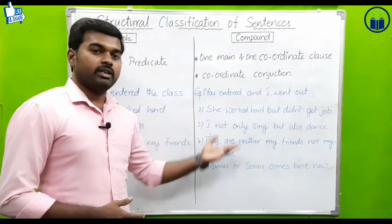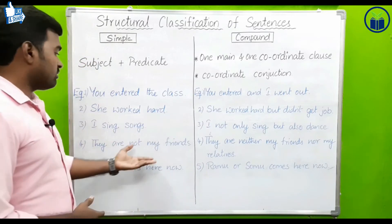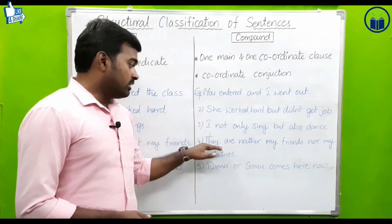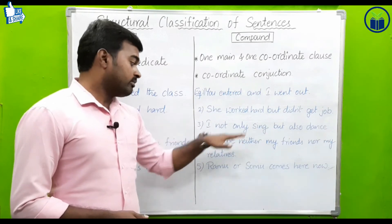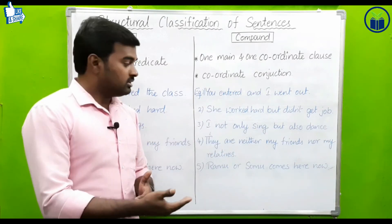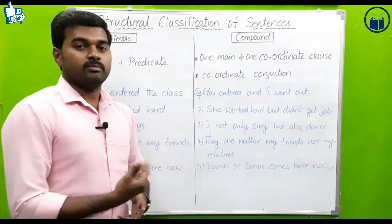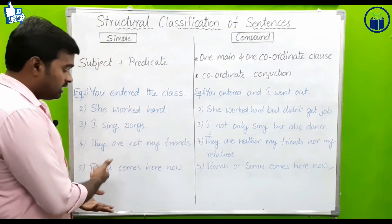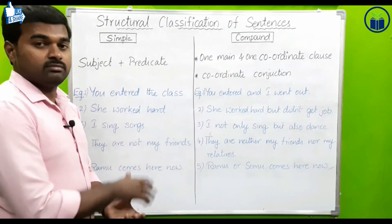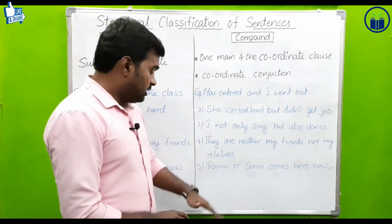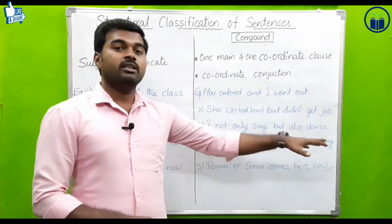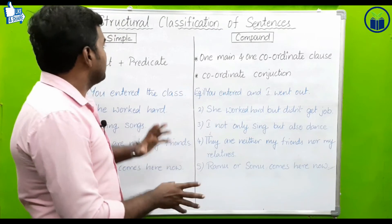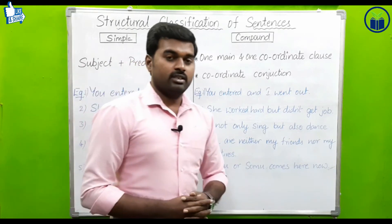Number four: 'They are neither my friends nor my relatives.' Here 'neither...nor' is the coordinate conjunction. Number five: 'Ramu or Somu comes here now.' So these are examples of simple and compound sentences.